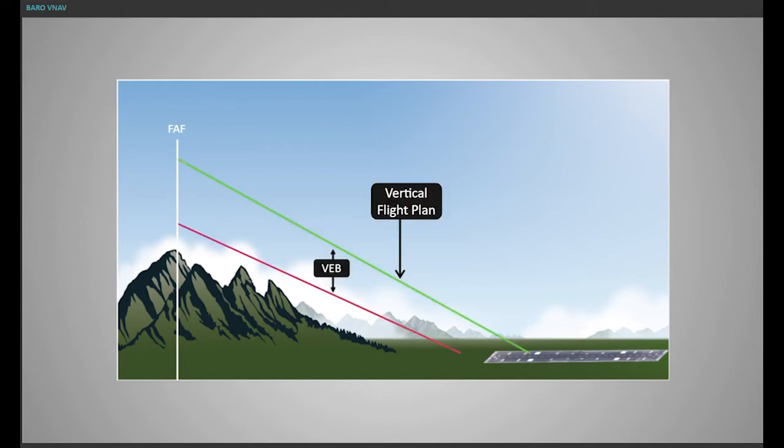The vertical error budget, VEB, is a mathematical function of all of the system errors which ensures the minimum required vertical clearance between the aircraft guided along the final path and the ground obstacles within a given outside air temperature range.